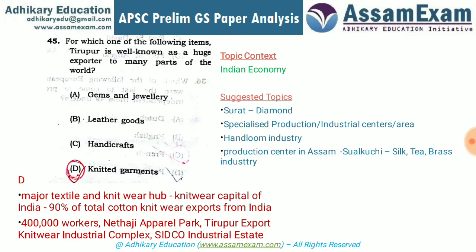Suggested topics include other centers of concentrated industrial production — for example, Surat is famous for diamond cutting and polishing, producing around 80-90% of India's total. There are also many handloom centers. With respect to Assam specifically, centers for handloom, silk work, tea production, and brass metal works — such as Sualkuchi — are important to know.